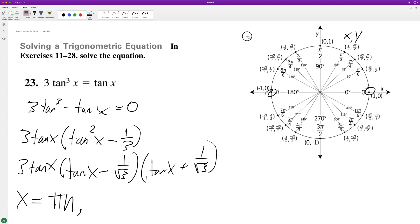So π/6 and 7π/6 would work for tan(x) - 1/√3, plus πn. And then 5π/6 and 11π/6 will work, and that's it.